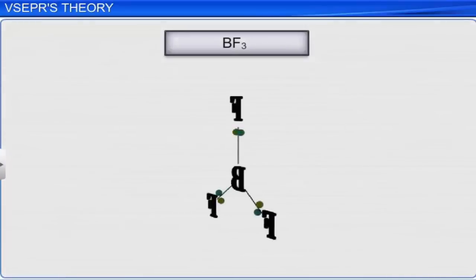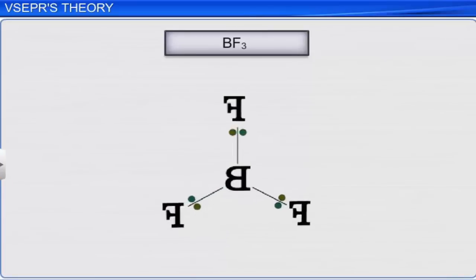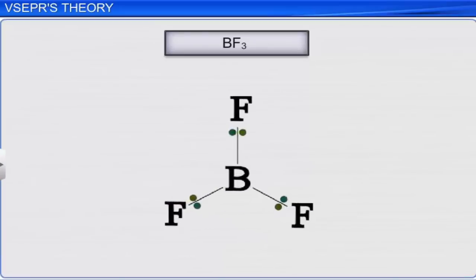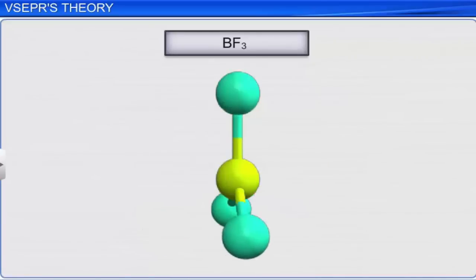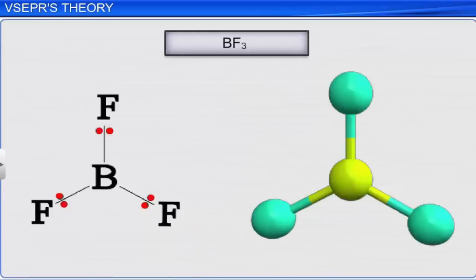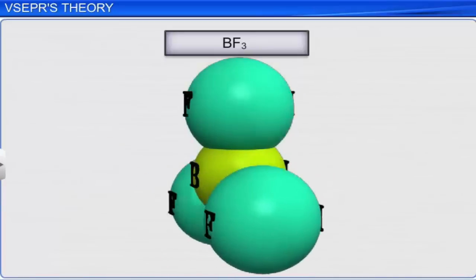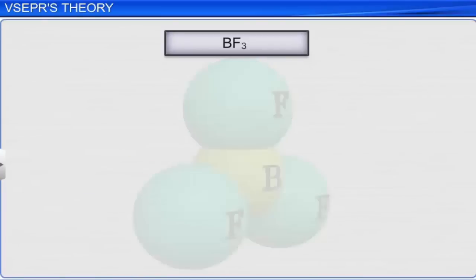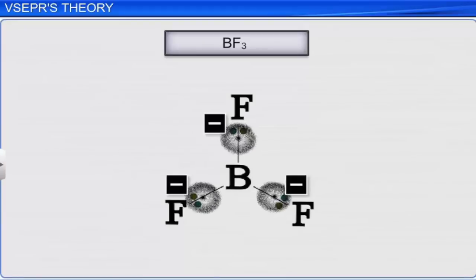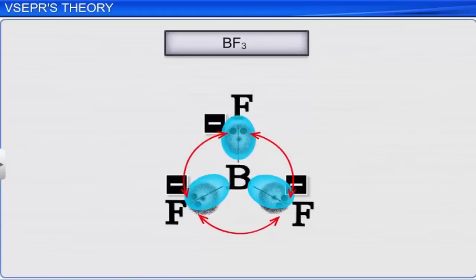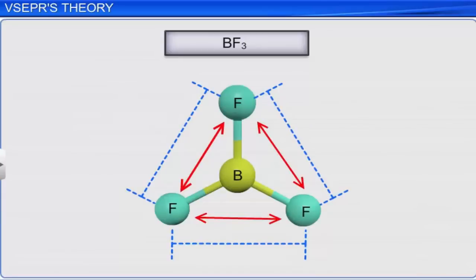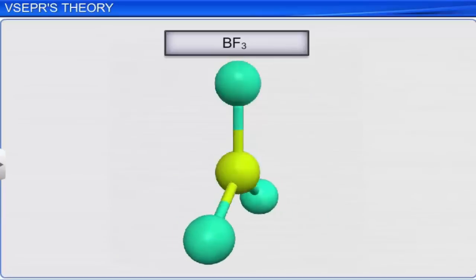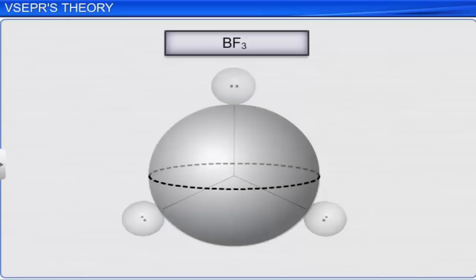The valence electron pairs surrounding the central atom in a molecule mutually repel each other. Thus, these electron pairs arrange themselves in space to minimize repulsions, giving the molecule a definite geometry. In molecules where the central atom is surrounded with only bond pairs, it possesses definite geometry, as in BF₃. Since the electron pair is a negatively charged cloud, bonded atoms move apart to minimize repulsions. To minimize repulsion, the distance between atoms has to be maximum, achieved by imagining the electron pairs located on the surface of a sphere at maximum distance from each other.